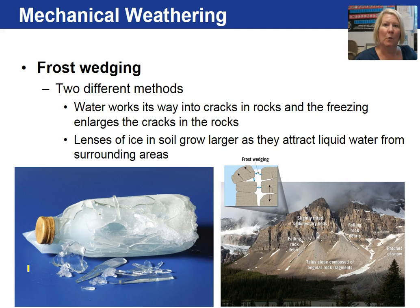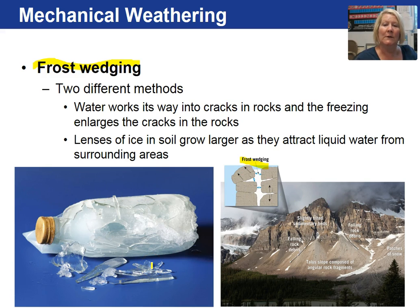Looking at different types of mechanical weathering, I want to start with frost wedging. Frost wedging is where water gets into a crack and expands — water expands 9%. When the water thaws and more water gets into that larger crack, it refreezes, making the crack even larger until the rock begins to crumble. If you've ever put a glass bottle into the freezer and forgot about it, the water will expand and break the glass. It's still glass, it's still water — the chemistry hasn't changed. All we have done is broken it into pieces. That is mechanical weathering, specifically frost wedging.